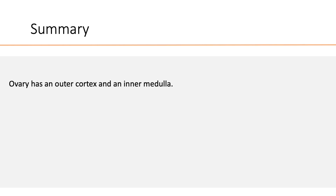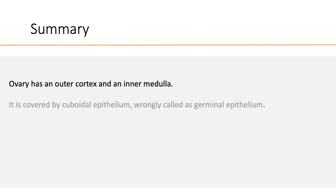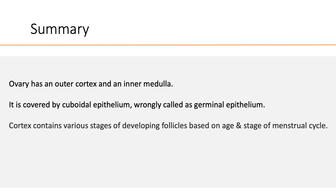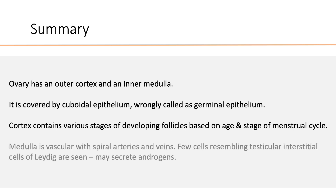To recap: the ovary has an outer cortex and an inner medulla. It is covered by cuboidal epithelium, wrongly called germinal epithelium. The cortex contains various stages of developing follicles based on age and stage of the menstrual cycle. The medulla is vascular with spiral arteries and veins. A few cells resembling testicular interstitial cells of Leydig are also seen here, and they may secrete androgens.